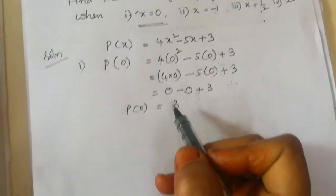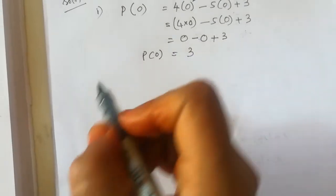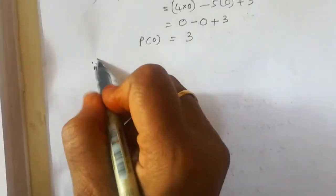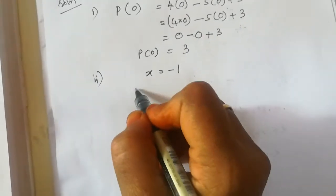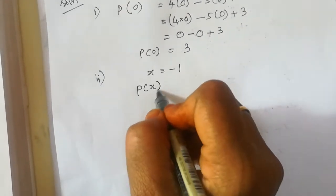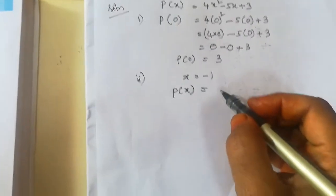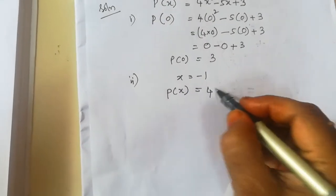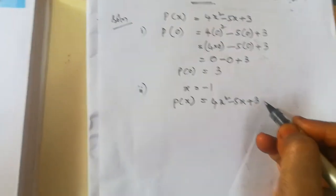In the same way, you have to do other problems also. The second one: x equals minus 1. When x equals minus 1, P of x equals 4x squared minus 5x plus 3.